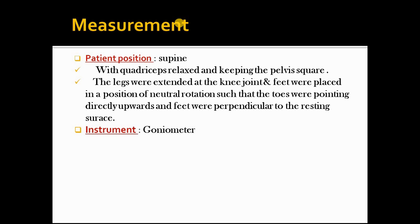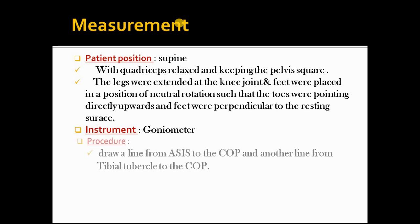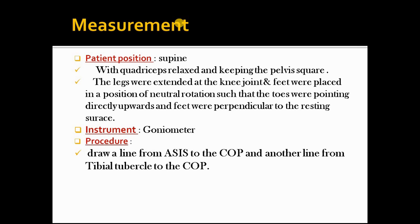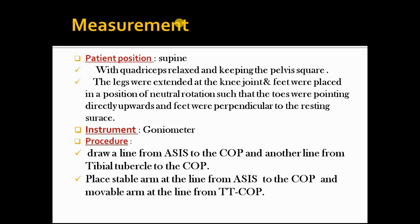The instrument used for measurement is a goniometer. The procedure for measurement is: draw a line from ASIS to the center of patella and another line from tibial tubercle to the center of patella. Then place the stable arm at the line from ASIS to the center of patella, and the movable arm at the line from tibial tubercle to the center of patella. Measure the angle between the intersection of these two lines.